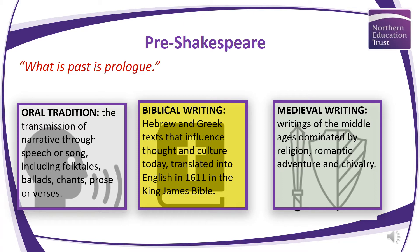That date of 1611 is particularly significant — it's also the date Shakespeare wrote The Tempest. There's a little debate as to whether the book Prospero is reading could be related to King James and his Bible, because King James had a fascination with the supernatural. Then we're going to look into medieval writing — how this time period was dominated by religion as influenced by the Bible, and romantic adventure and chivalry, which we know will influence Shakespeare and beyond.